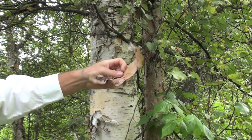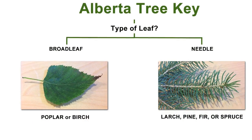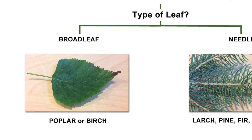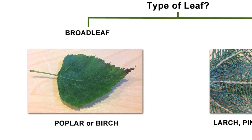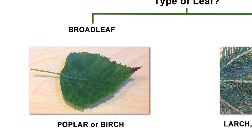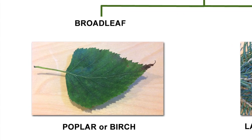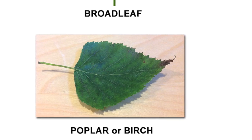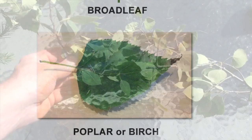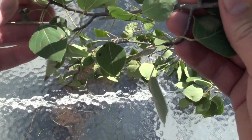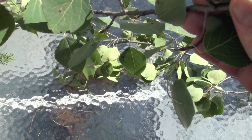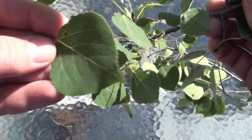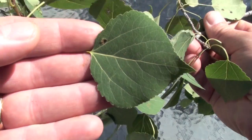Poplar and birch trees both have broad leaves — they do not have needles. So when we have unidentified samples from either of these trees, we can rule out any trees with needles. But what about telling the difference between poplar and birch? Can we use leaves for that? Let's take another close look at our samples.